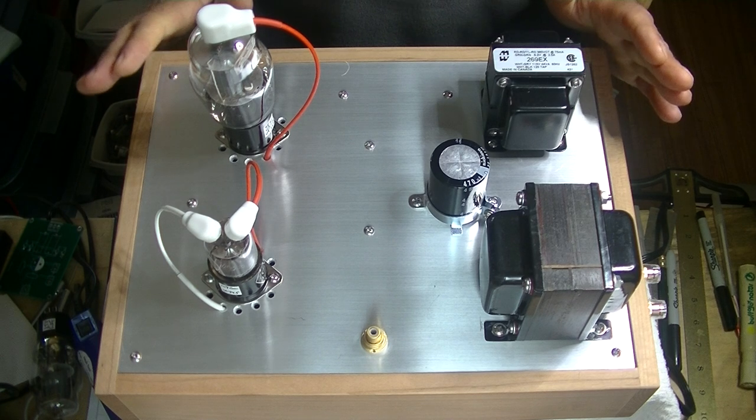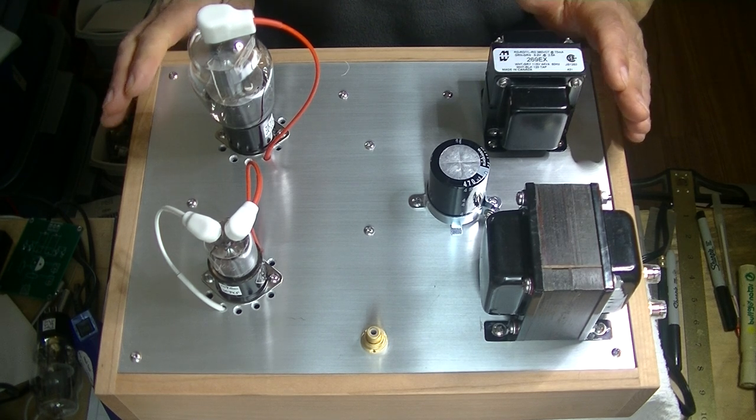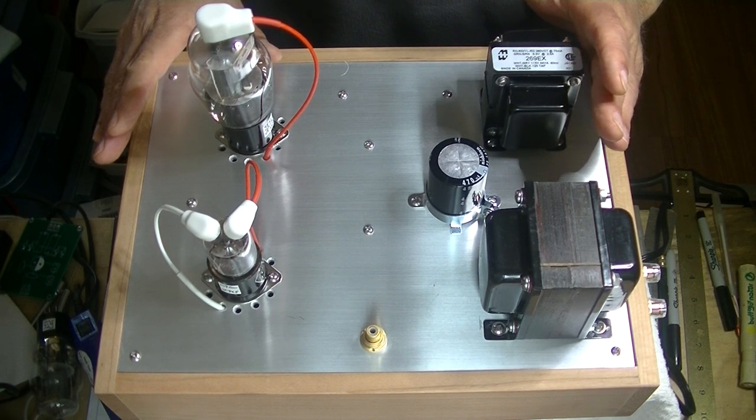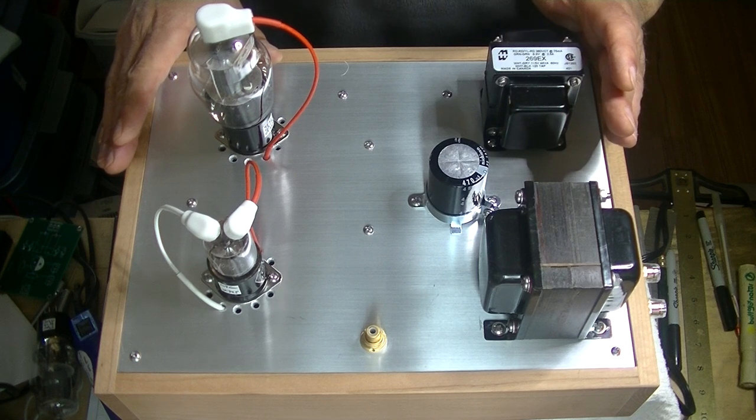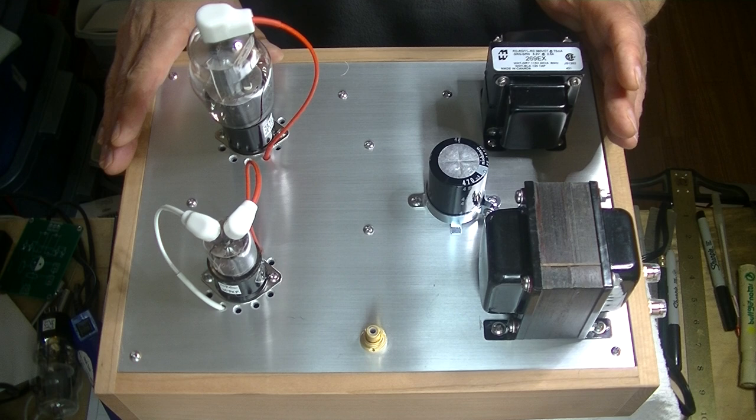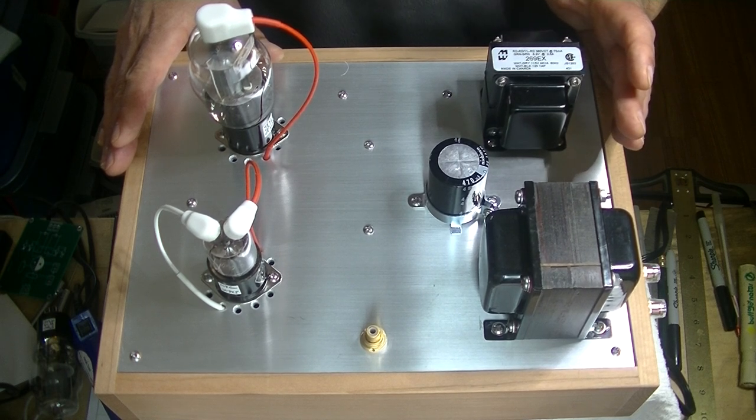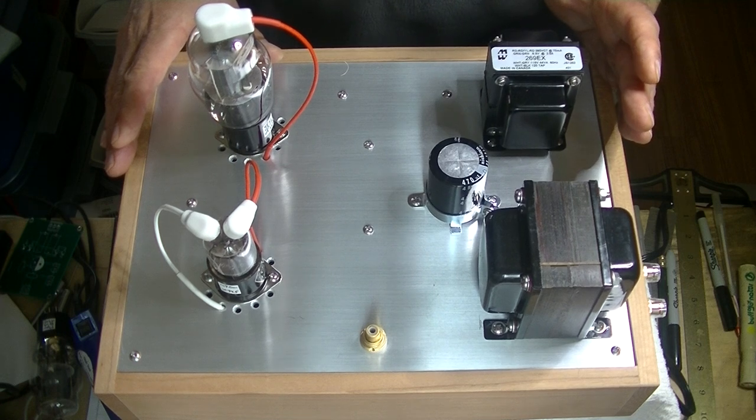Today we're going to look at my newest prototype amp. It's a low-powered SE or single-ended amp that uses, get ready for this, the DET20 or the CV6 or the 2C22 or the 7193 or the 6S8S, just to name a few.